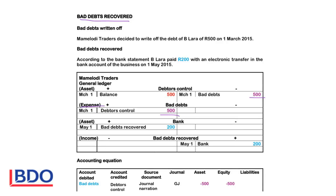After his debt was written off, if you recover some of this money at a later stage, you can't record it into the debtor's account because his account has no balance and you closed his account. Therefore we have to create an income — bad debts recovered — when we receive money. When we wrote off the bad debts, we created the expense that reduced profits in the income statement.